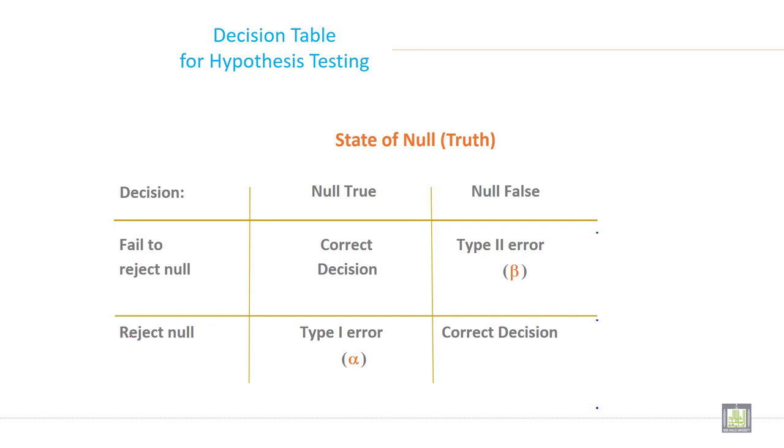And if rejecting true null hypothesis, then it is called type 1 error, alpha.